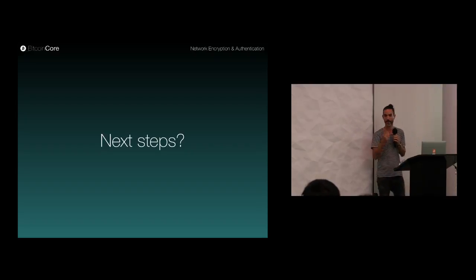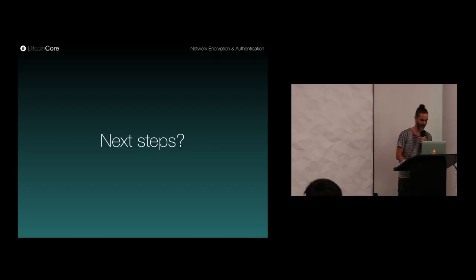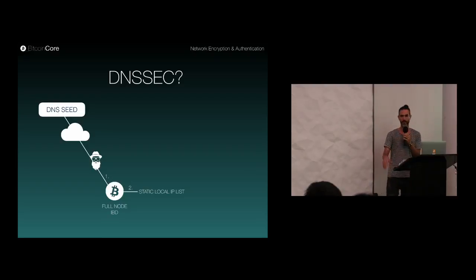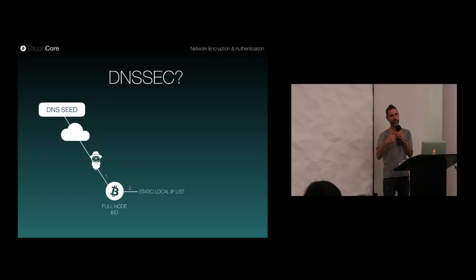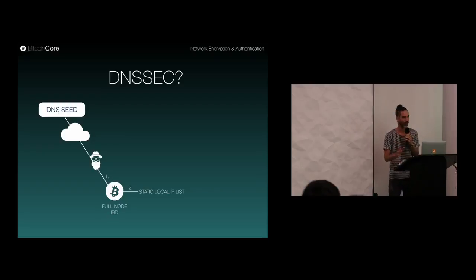Next steps: implementation, hopefully. There's a lot going on in Bitcoin Core right now with network refactoring, and once that has settled, we can move on with implementing these things. Another puzzle that isn't ideal is the DNS seeds. When you first start up a Bitcoin Core node, it gets IPs over a DNS channel, which is also easy to tamper with — somebody could partition you to a certain edge of the network. This also deserves some sort of authentication.